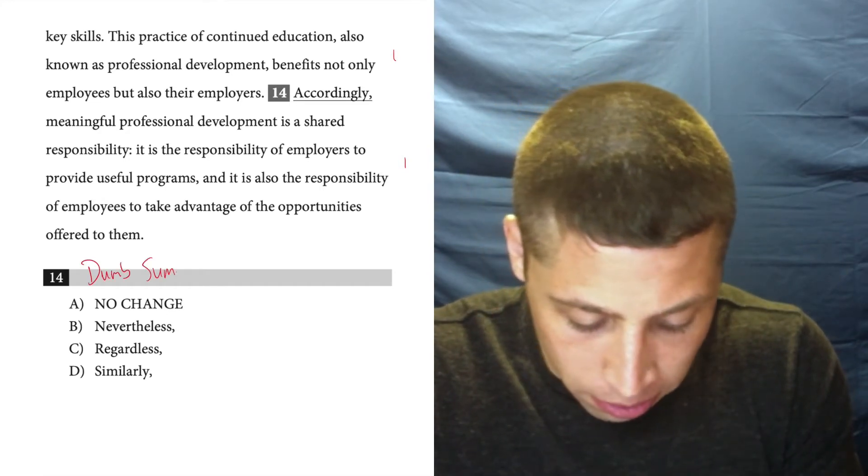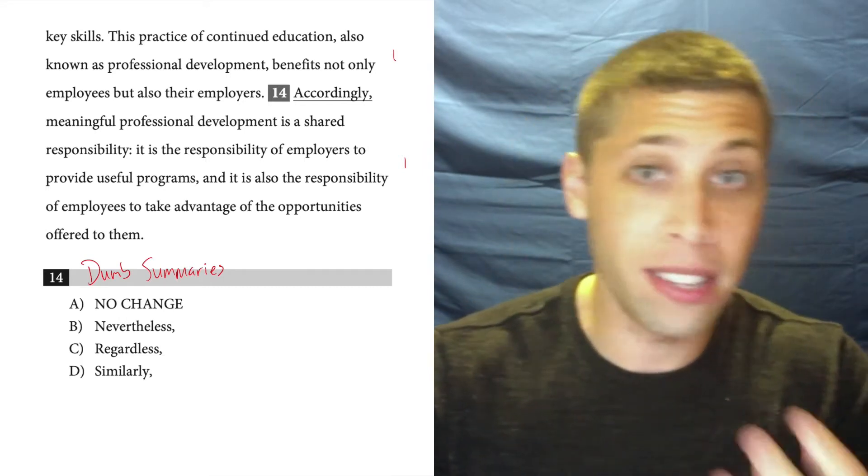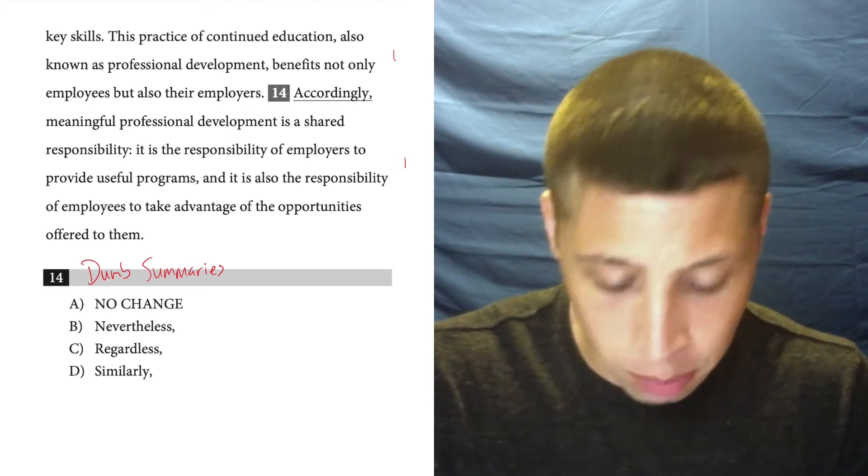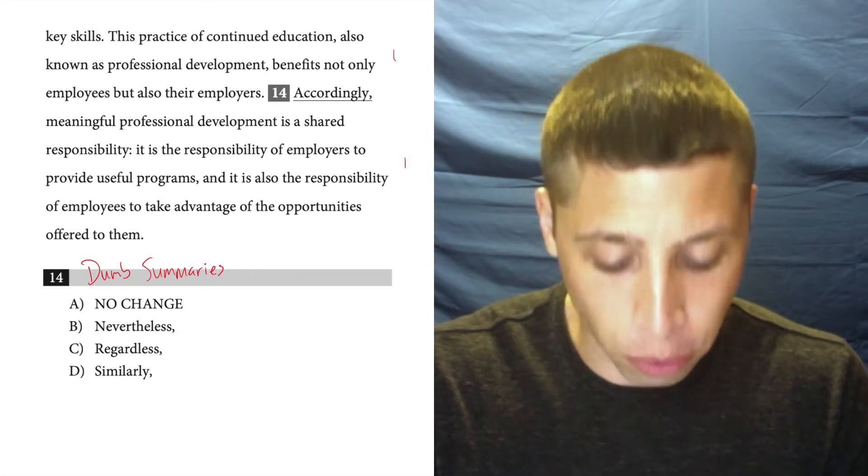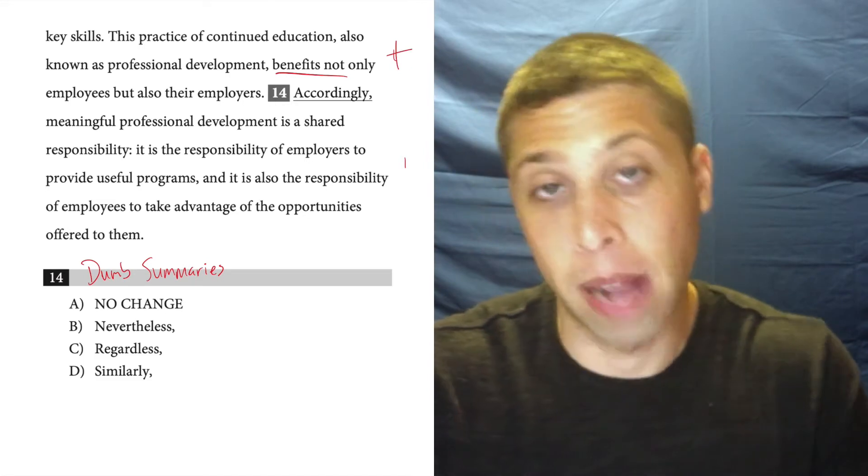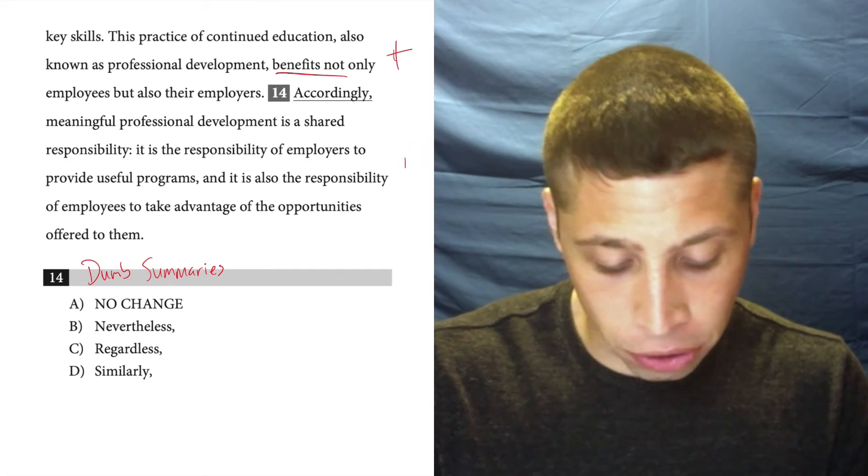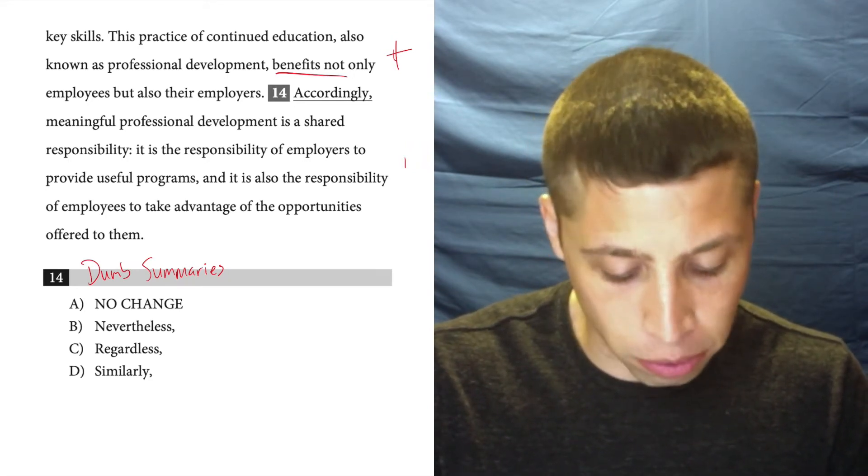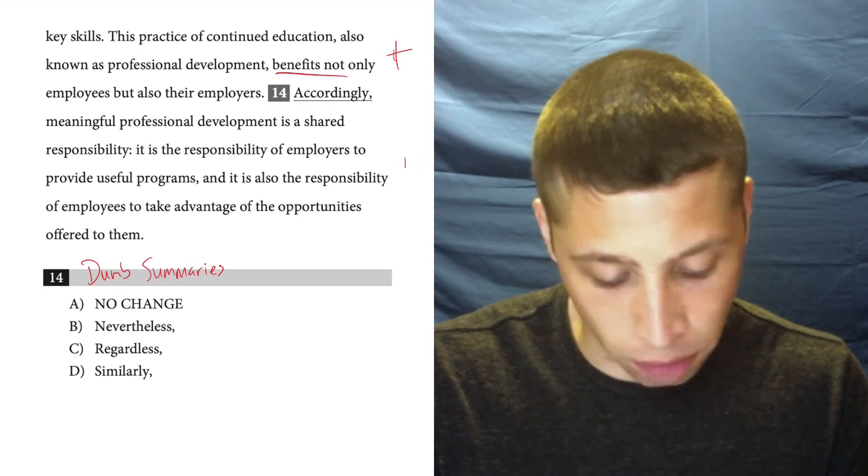Dumb summaries should start with the sentences themselves. What do we see in these sentences? Let's ignore the transition word. Let's get a sense of these sentences. This practice of continued education, also known as professional development, benefits not only employees but also their employers. So benefits means it's positive. I'm going to skip the transition word. Meaningful professional development is a shared responsibility. It is the responsibility of employers to provide useful programs. It is also the responsibility of employees to take advantage of the opportunities offered to them.